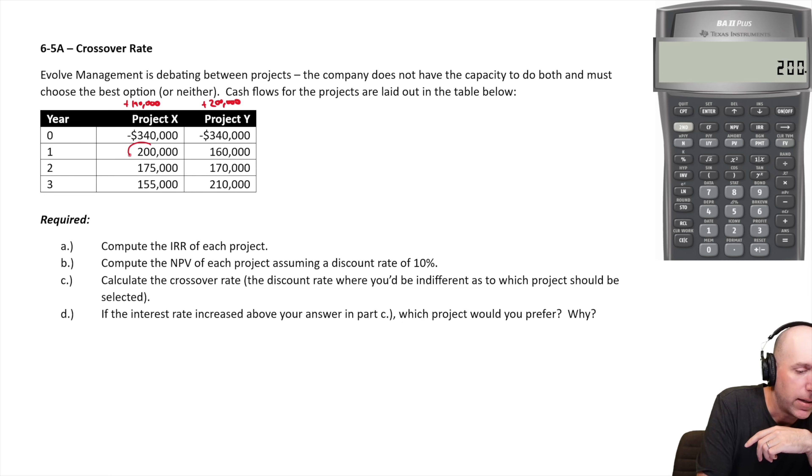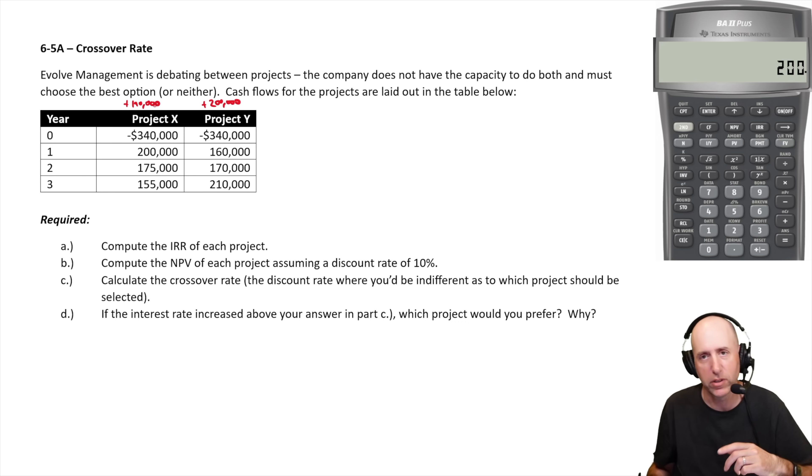But time value of money matters. The fact that you're getting a bunch of money early with project X and less with project Y, and more project Y's money comes in late and less in project X, means even though project X has less raw dollars, it might be more attractive. So anyway, that's sort of important in these calculations.